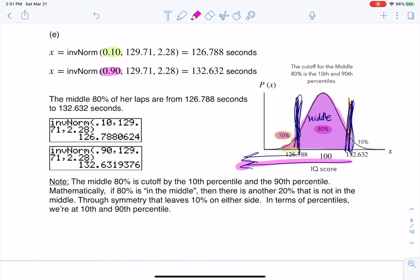And when you do 80 plus 10, you get 90%. And that's why I have the 90th percentile in there. So that's why I say the middle 80% is cut off by the 10th percentile and the 90th percentile. That's what's trapping the middle 80% of the area under that curve. And the numbers you get there are 126.788 and 132.632.